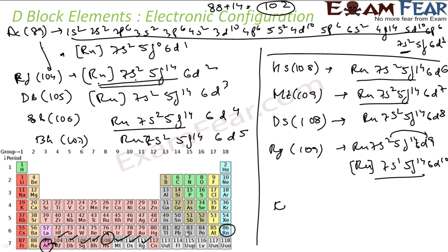And the next is Copernicium, that is CN 112. Here also 102 electrons are taken care by Rn 7s2 5f14, and then I have 6d, and the remaining 10 electrons will be 6d10. So that is the electronic configuration.